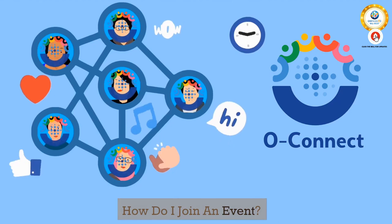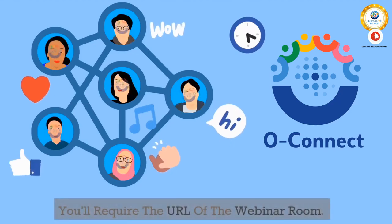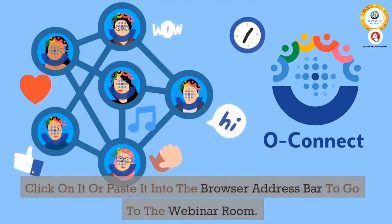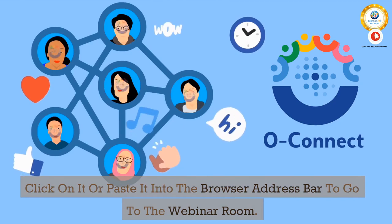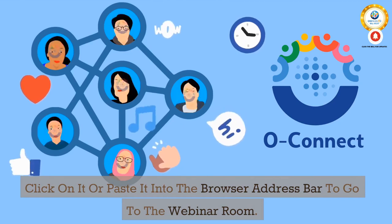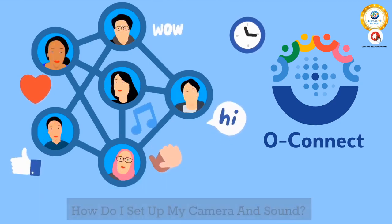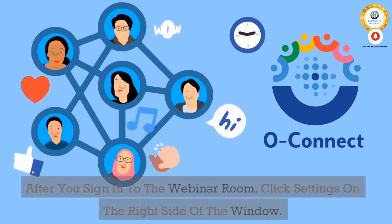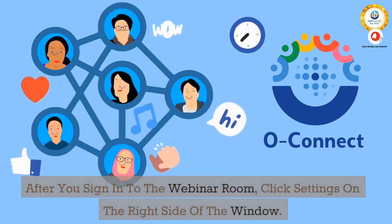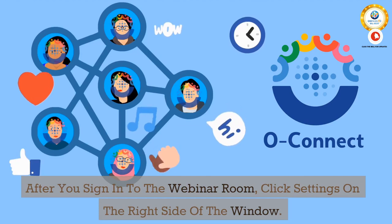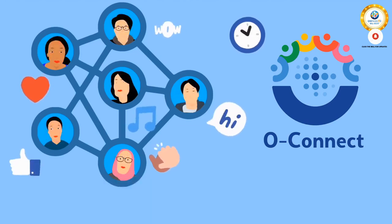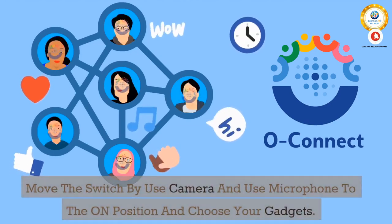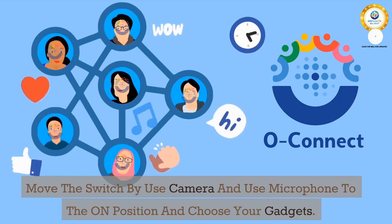14. How do I join an event? You'll require the URL of the webinar room. Click on it or paste it into the browser address bar to go to the webinar room. 15. How do I set up my camera and sound? After you sign in to the webinar room, click settings on the right side of the window. Move the switch for 'use camera' and 'use microphone' to the on position and choose your devices.